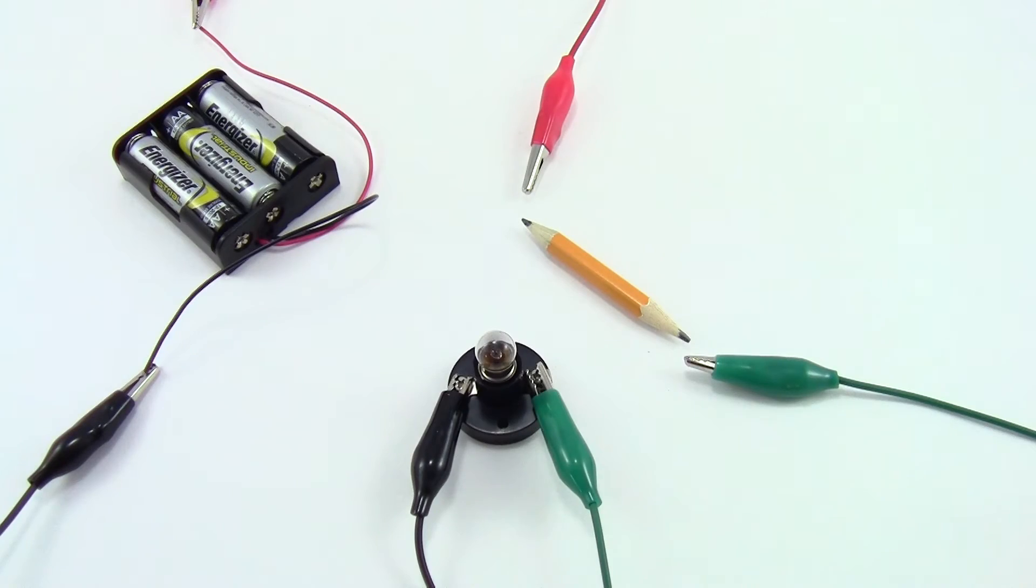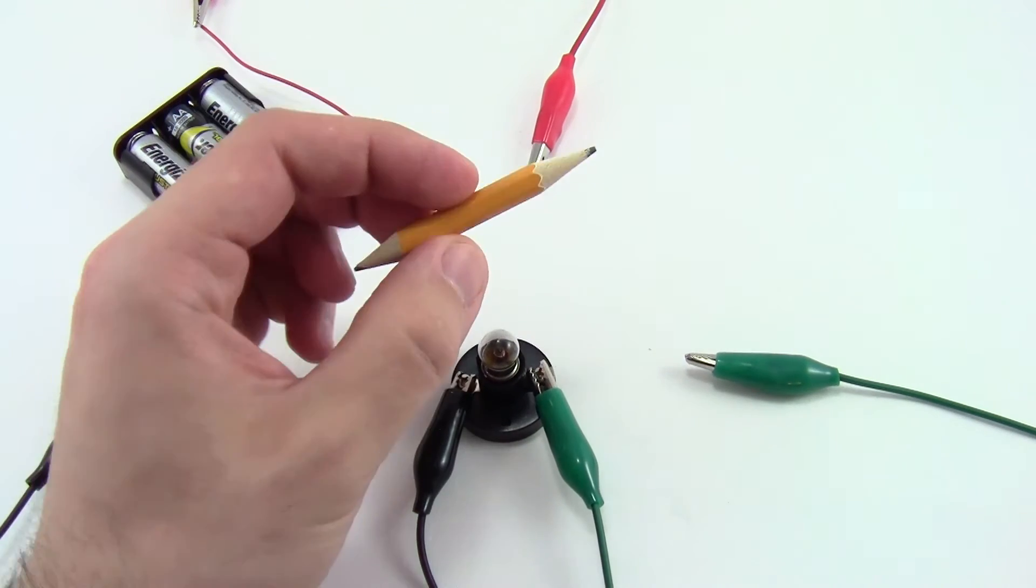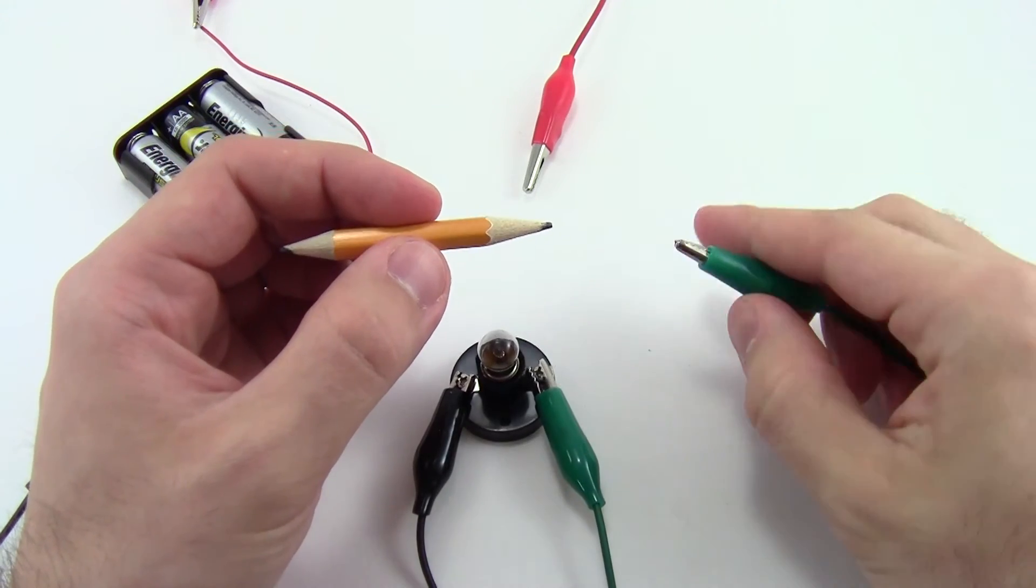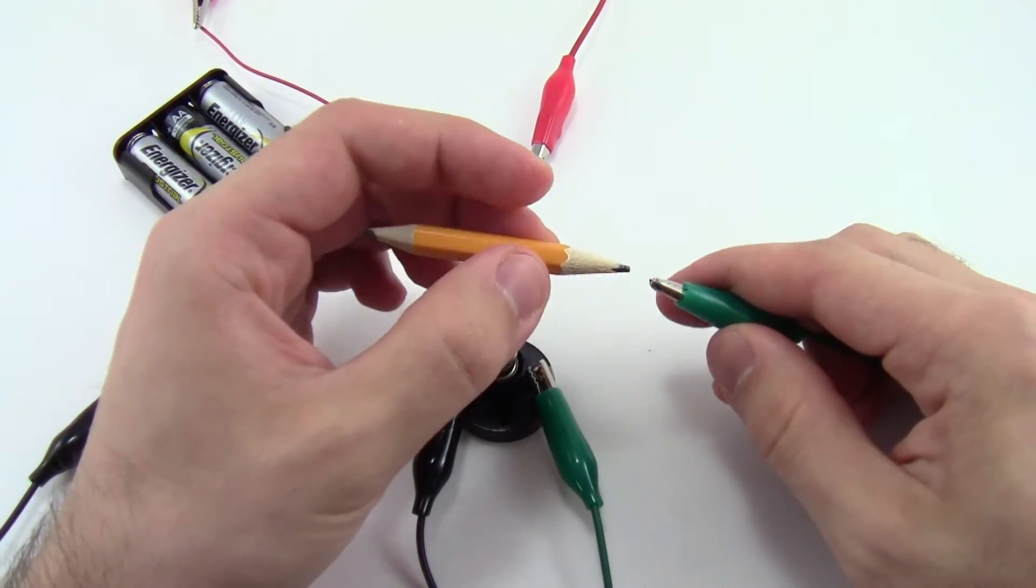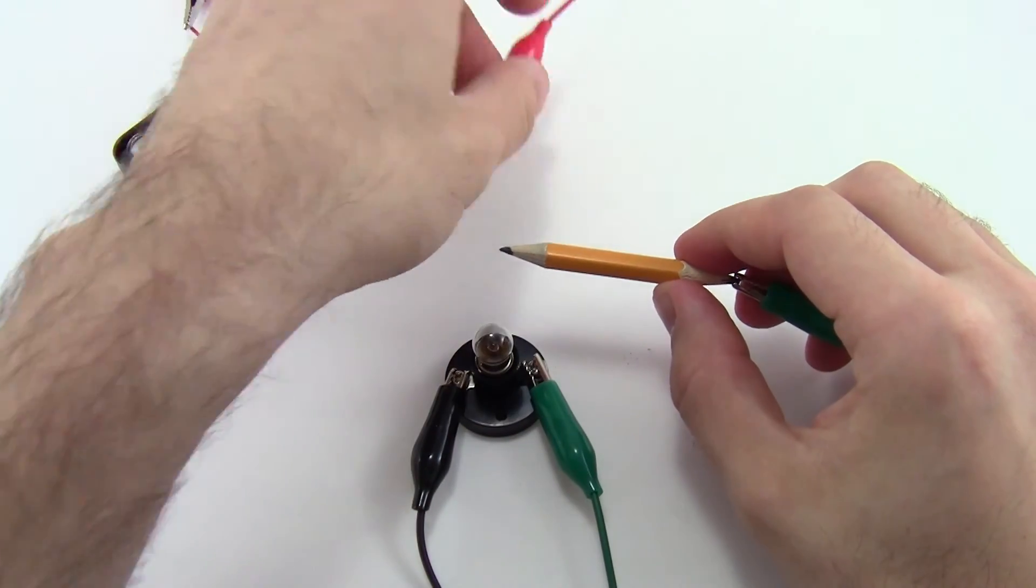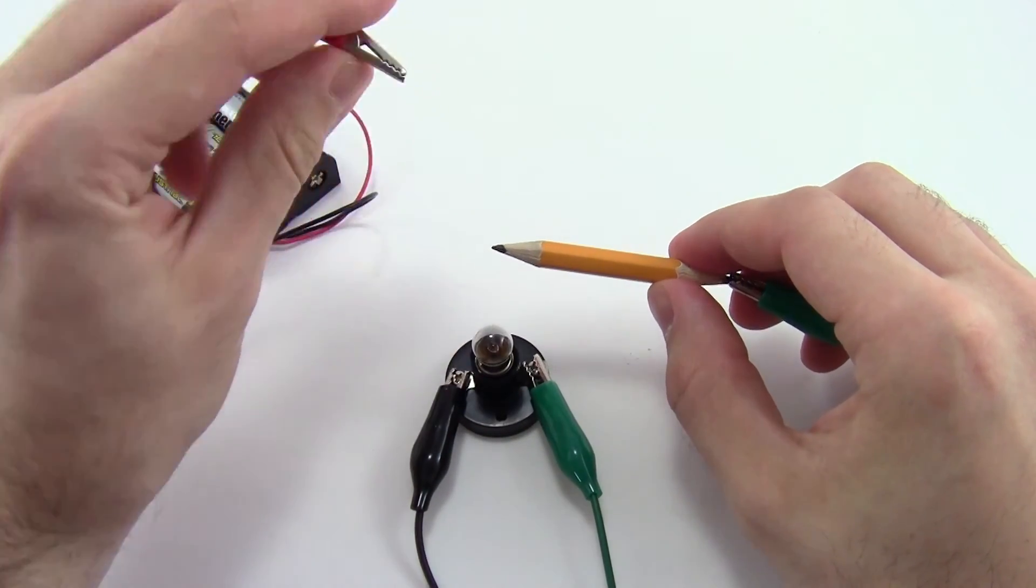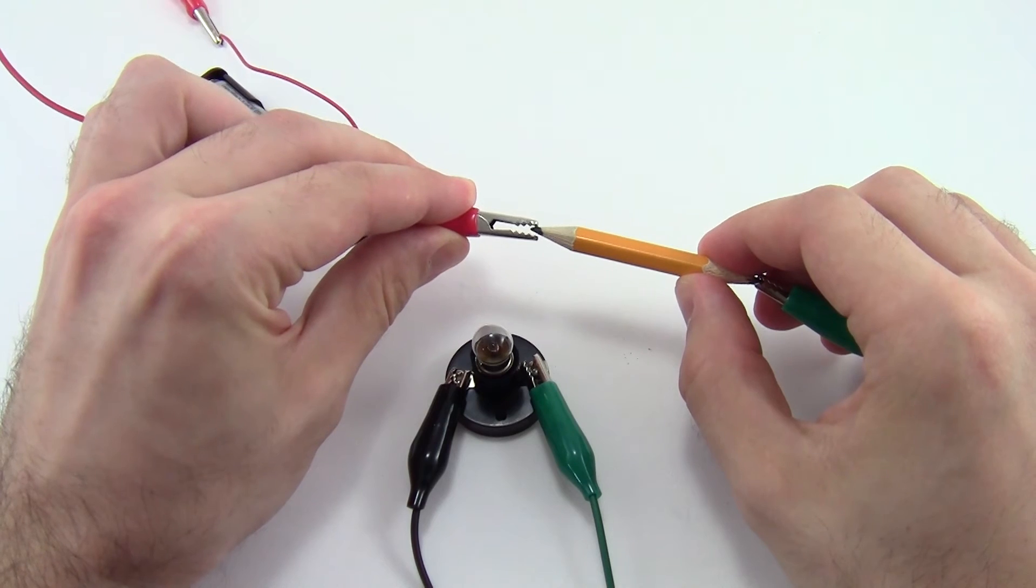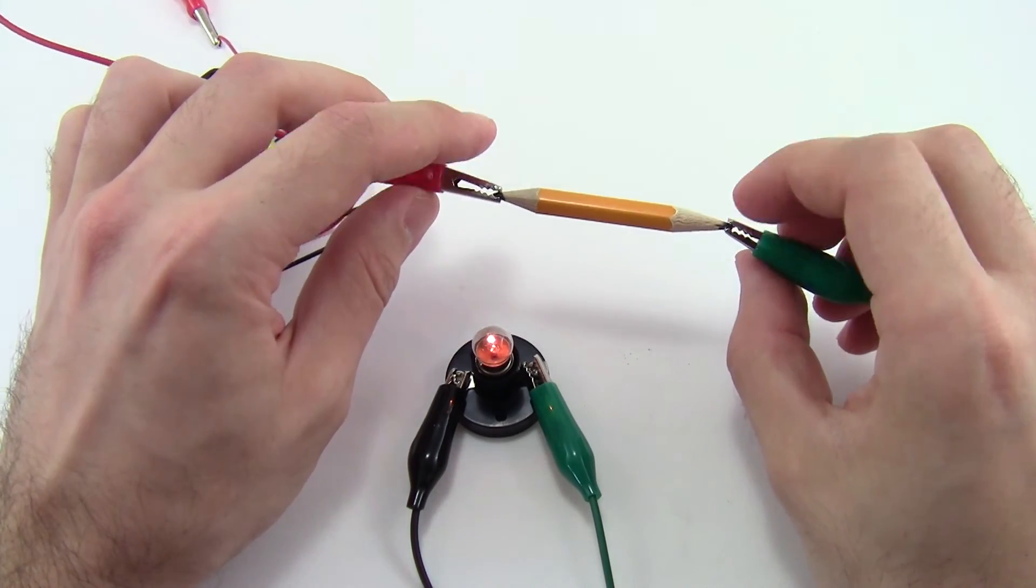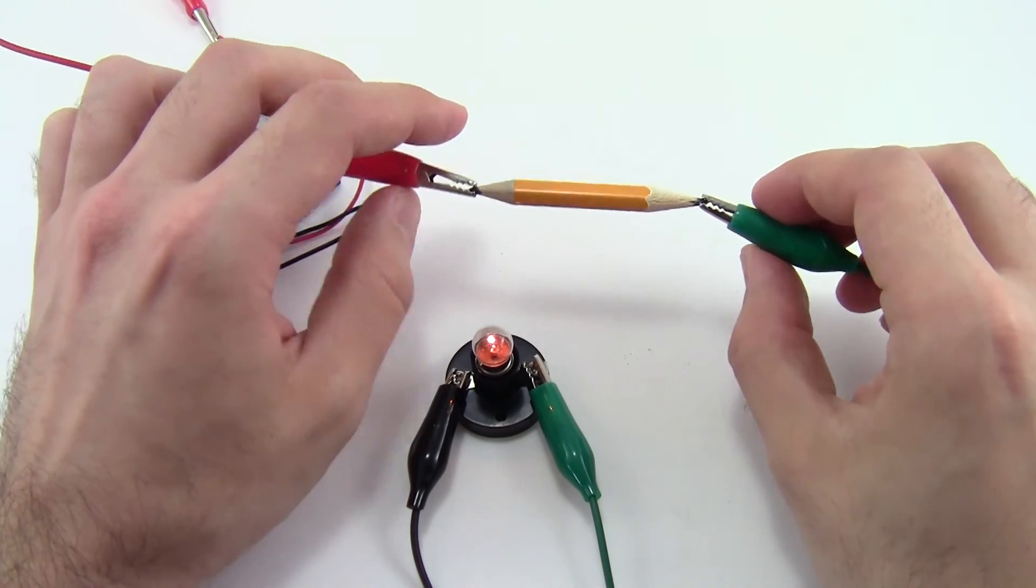For the pencil resistor project, you will make resistors out of pencils by cutting them to various lengths, and then sharpening them on both ends. To connect them to your circuit, use the alligator clips, and clip on to the graphite tip on both ends. Make sure you do not connect to the wood, and that the metal from the alligator clip actually makes contact with the graphite. You can see that when I do that, the light bulb lights up much dimmer than it did before when I connected the two alligator clips directly to each other.